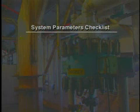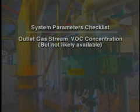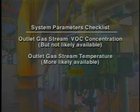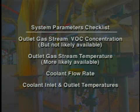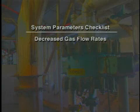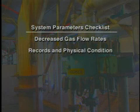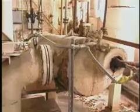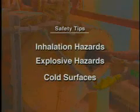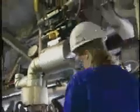To review, to determine if the condensation system is working properly, field personnel should observe if possible the outlet gas stream VOC concentration, though it is not likely available. The outlet gas stream temperature is more likely available. Indirect indicators of efficiency include the coolant flow rate and the coolant inlet and outlet temperatures. Decreased gas flow rates will reduce the capturing of the contaminant. As with any inspection of an air pollution control device, attention must be given to the system's records, physical condition, and compliance with applicable rules. Condensation systems used for air pollution control have many safety considerations, including inhalation hazards, explosive hazards, and cold surfaces. Further training and experience will be necessary to complete all field tasks safely.